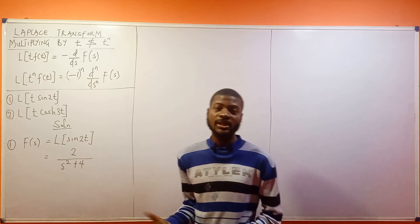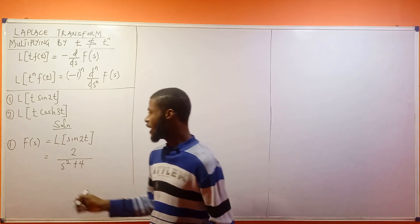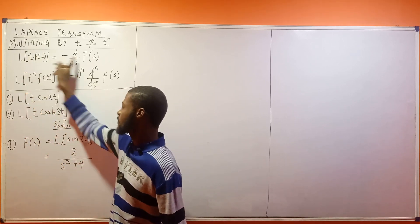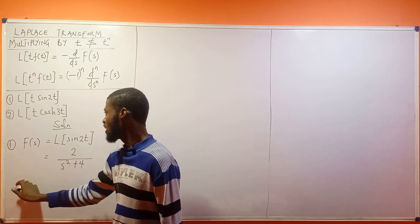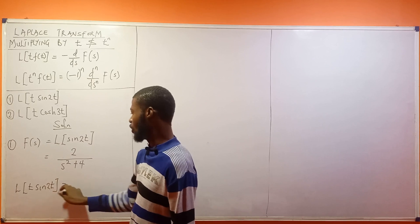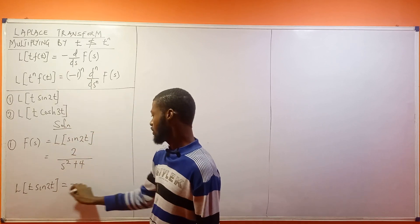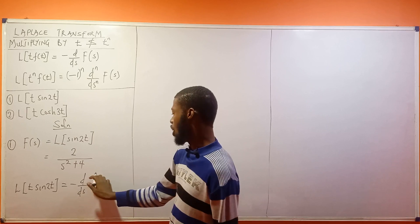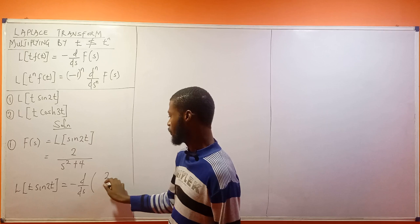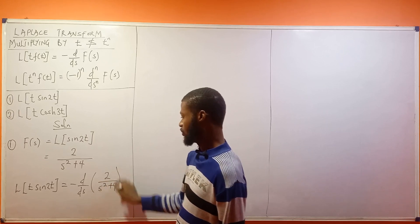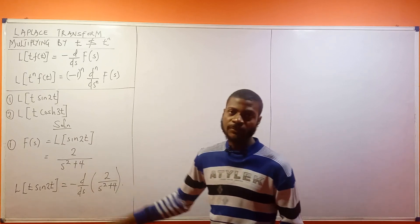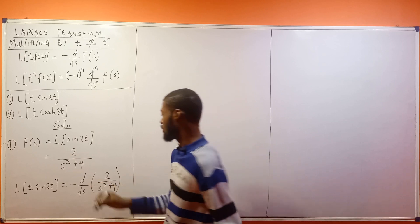That gives us 2 over s squared plus 4. Now the next thing: since we just have t multiplying it, the Laplace transform of t·sine 2t is going to be equal to minus d over ds of F(s). After solving, F(s) is 2 over s squared plus 4. If we evaluate this expression, we'll get our final answer.